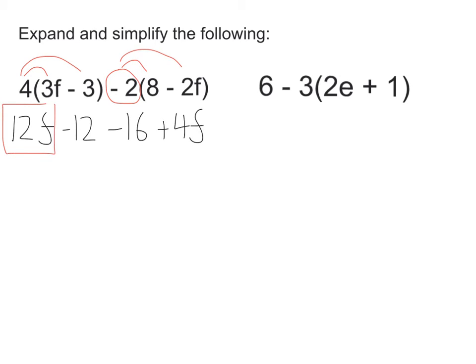I've got a 12f and a plus 4f. And I've got a negative 12 and a negative 16. So I've got 12f plus 4f. Well, that's 16f. And I've got negative 12, take away another 16, would give me negative 28. So my expression is 16f take away 28.